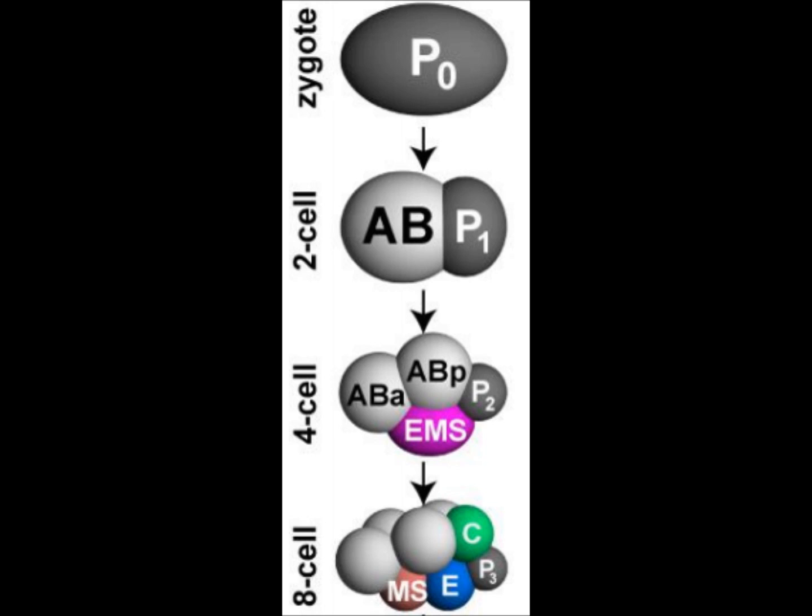This implies that MS and E are different because of some sort of cell-cell interaction or cell-cell signaling. This cell-cell signaling actually comes from the contact between P2 in the 4-cell stage and the posterior end of EMS.